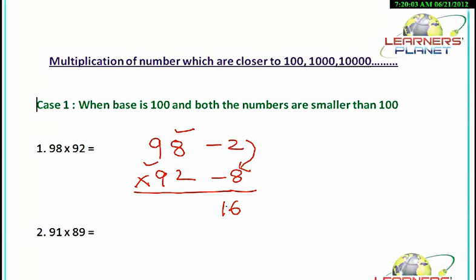Since there are two zeros in 100, from this multiplication of 2 and 8 we have to fill up two digits. If we are getting only one digit from this multiplication, we put a zero before it. If we are getting more than two digits, the hundreds digit will be carried over to the next calculation. In this case we are getting just two digits, so we write them as they are.